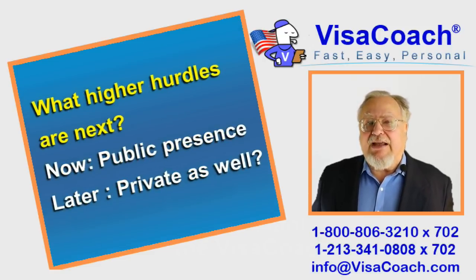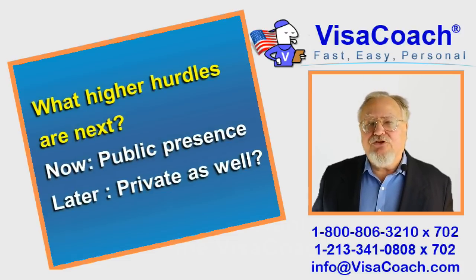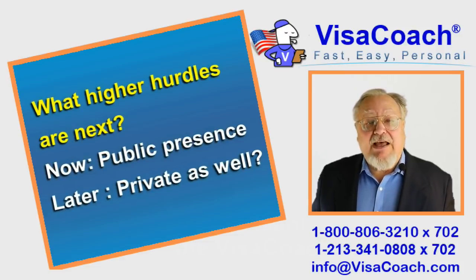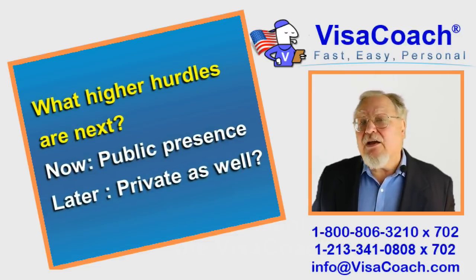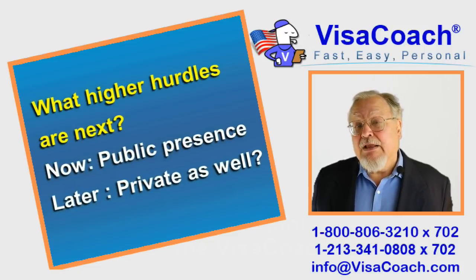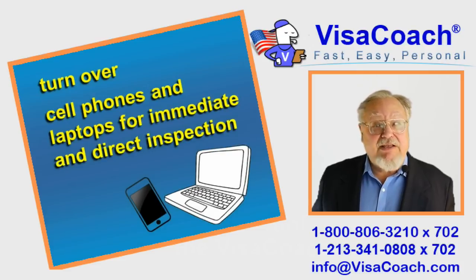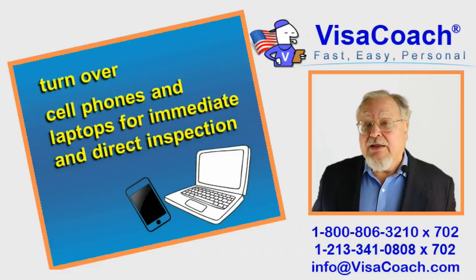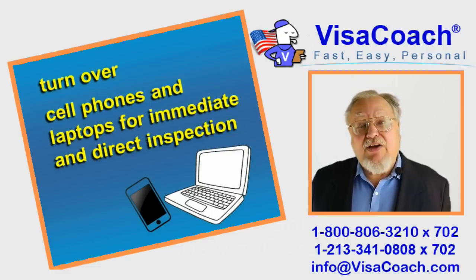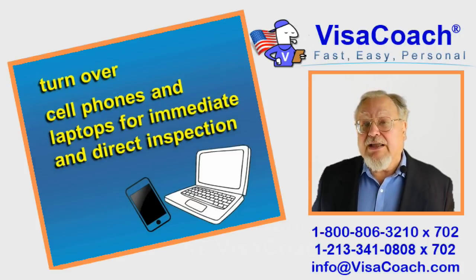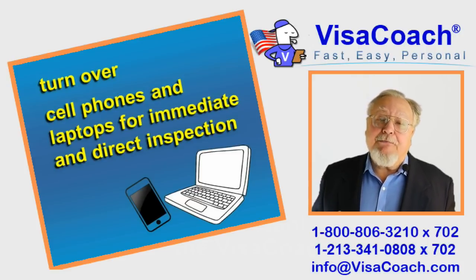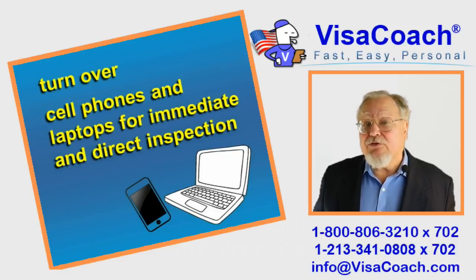What higher hurdles are next? At the moment they are just asking what social media platforms you use and what name you use while on them. This information allows them to view the same information that is available to the public. But proposals for the future are to reveal cell phone numbers — all the cell phone numbers you have used — and all email addresses, and eventually you might be required to provide passwords to all your accounts. Once that happens, not only your public presence would be inspected, but your private as well.